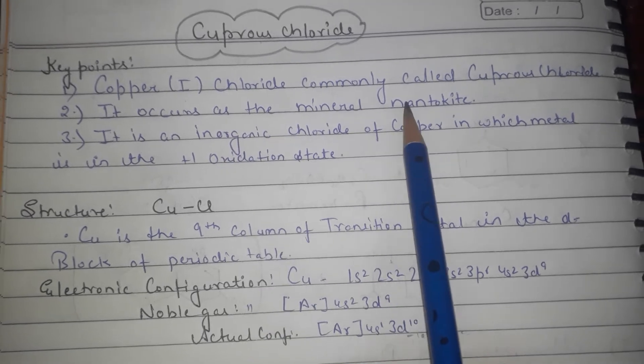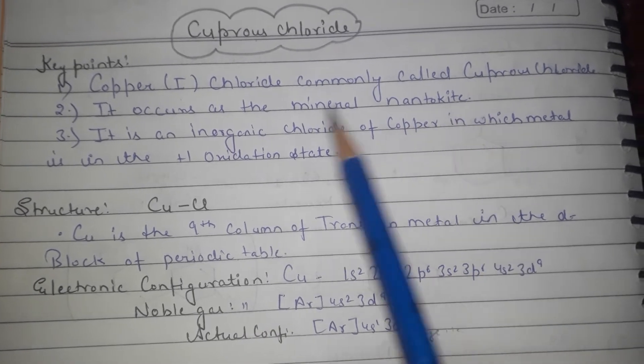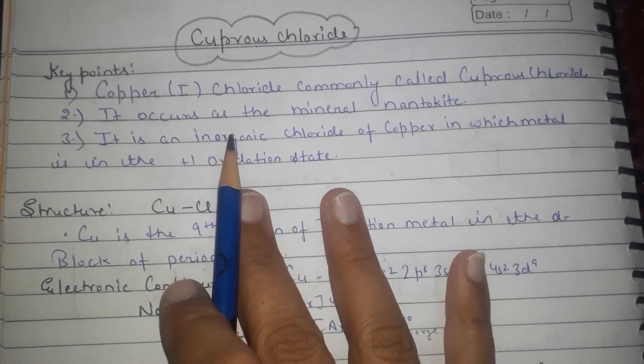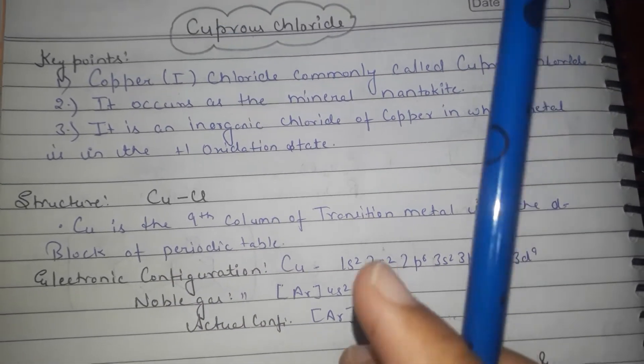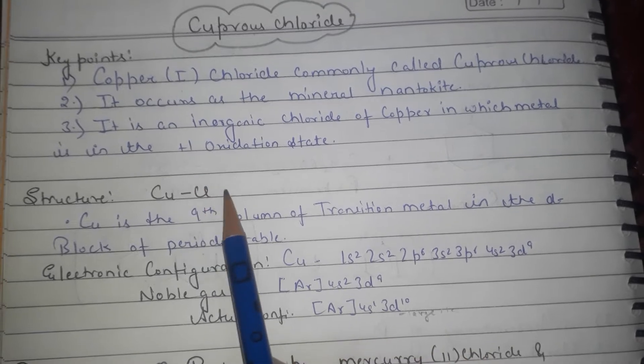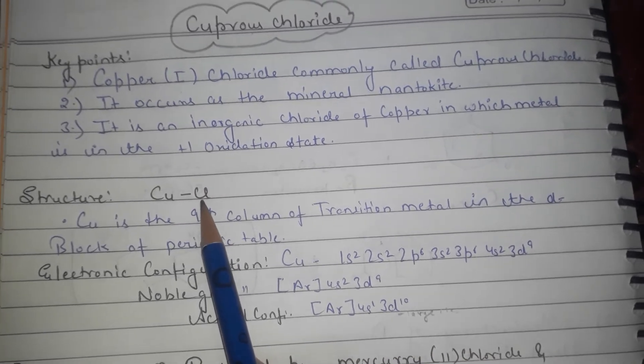It occurs as the mineral nantokite and it is an inorganic chloride of copper in which metal, as I told, has plus one oxidation state. Structure: Cu bonded with Cl.